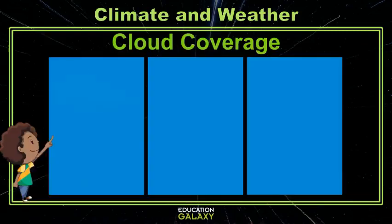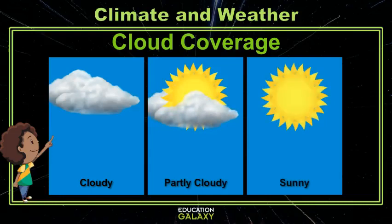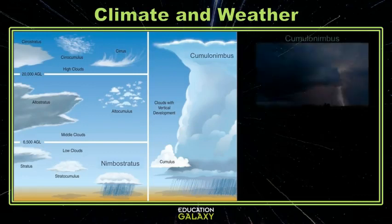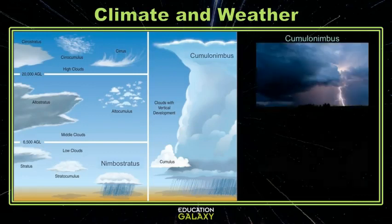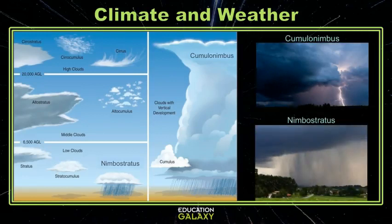Or you can measure cloud coverage by simply stepping outside, taking a look at the sky, and describing what you see. There are a lot of different types of clouds, but the ones we generally pay attention to the most are the ones that bring rain: cumulonimbus, or thunderstorm clouds, and stratonimbus, the clouds that bring slow and steady rain.